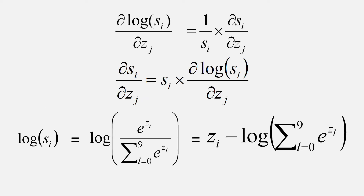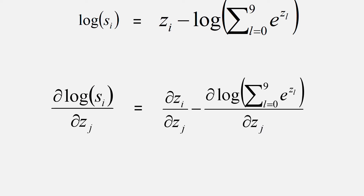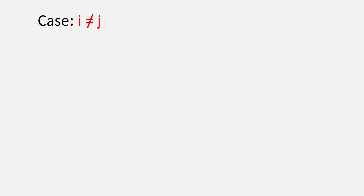This simplification gives us z_i minus log of the summation of e to the power z_l, where l varies from 1 to n, and here n equals 10. Then if we find the partial derivatives with respect to z_j, we get this expression. We can observe there will be one case where i equals j, and in all other cases i will not equal j. When i is not equal to j, ∂z_i/∂z_j equals 0.